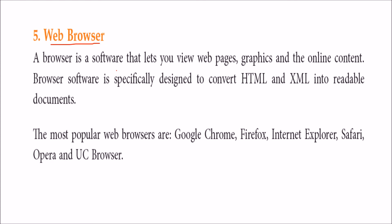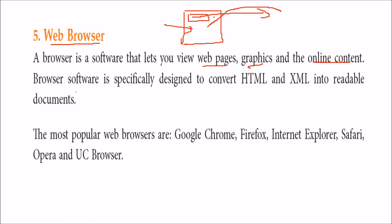What is a web browser? A browser is an application — a software. This browser has an address bar where you put the address, press Enter, and it connects to the web server, and then you get the website. A browser is a software that lets you view web pages, graphics, and online content. It is specifically designed to convert HTML and XML into a readable format. Various web browsers include Google Chrome, Firefox, Internet Explorer, Safari, Opera, and UC Browser.